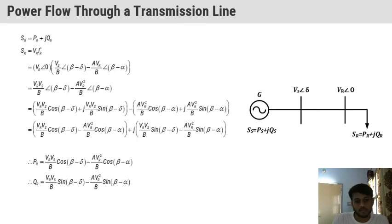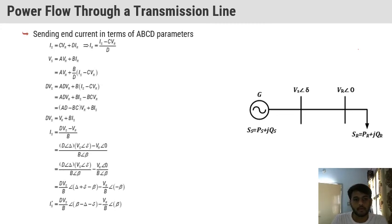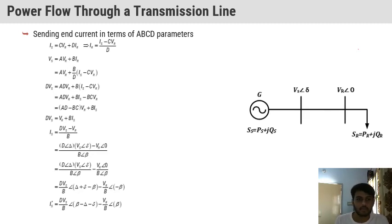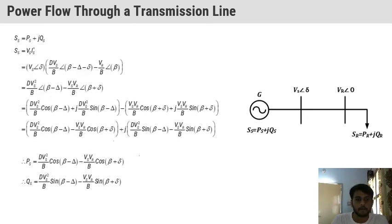We can generalize this power formula. You have to remember the formulas for power because sometimes powers are given at the sending end and receiving end and some parameters are missing — like the sending end parameter is missing and you are given all the values of the receiving end and voltages. At that time you have to calculate the missing parameters. The sending end current in terms of ABCD parameters gives us the values of PS and QS.